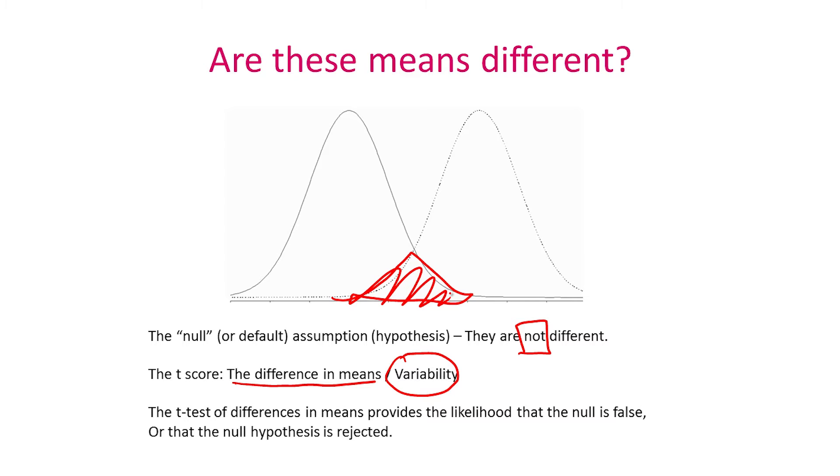So the t-test of differences in means provides a likelihood that the null is false or that the null hypothesis is rejected. When the t-score becomes low, it would actually suggest that the two means are identical to each other and we do not have enough evidence to reject this null hypothesis.